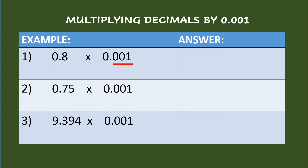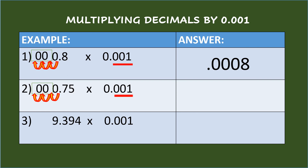Multiplying decimals by one-thousandth. Move the decimal point in the multiplicand three places to the left and fill in the vacant spaces with placeholder zeros. Then put the decimal point. So the answer is 7,500,000.